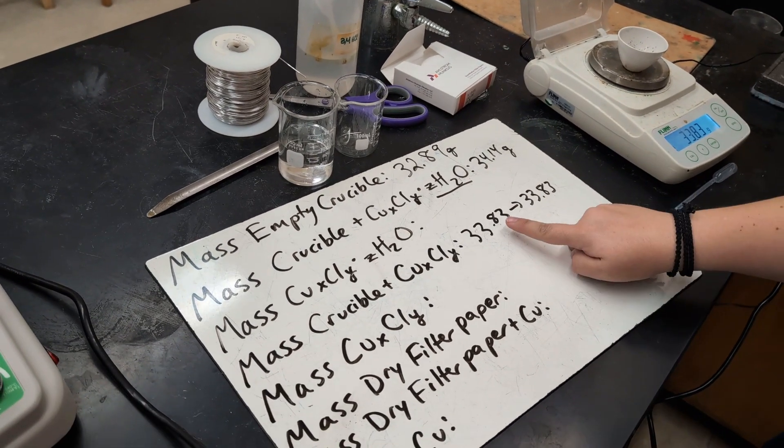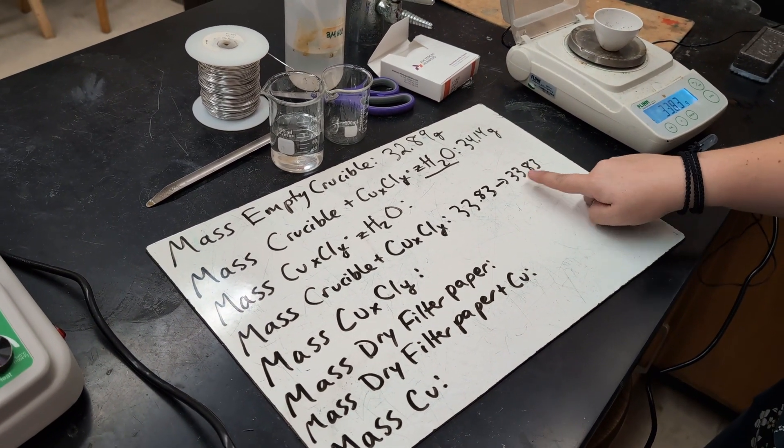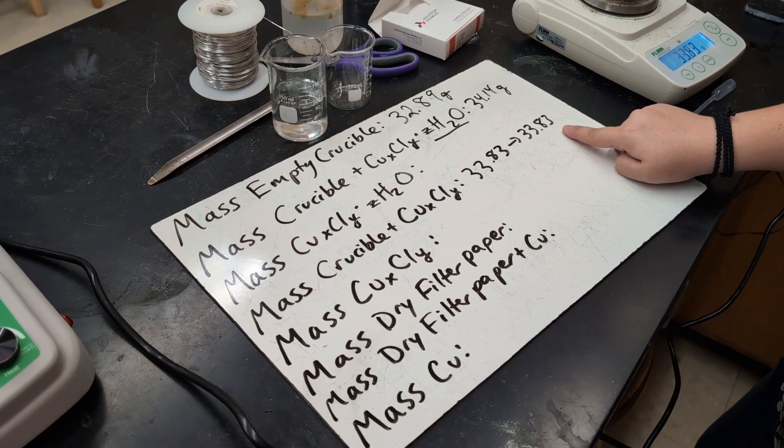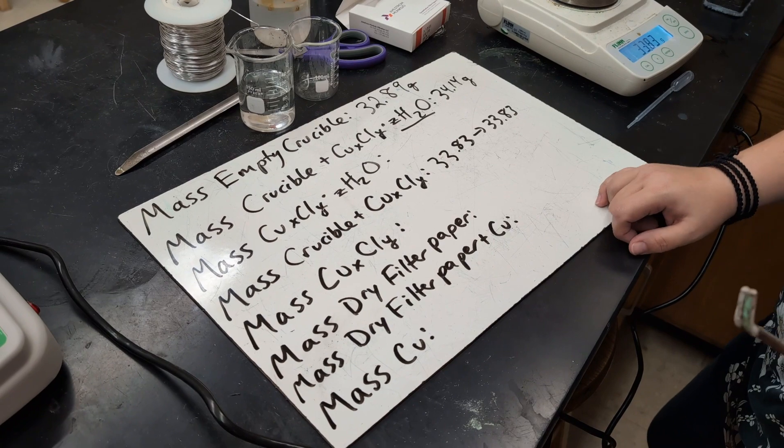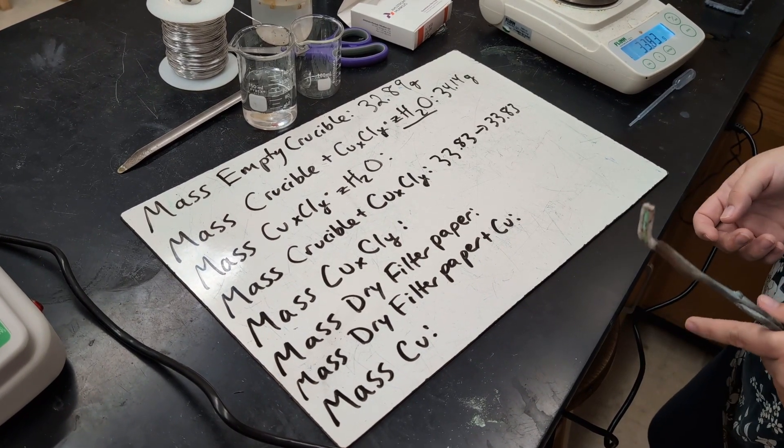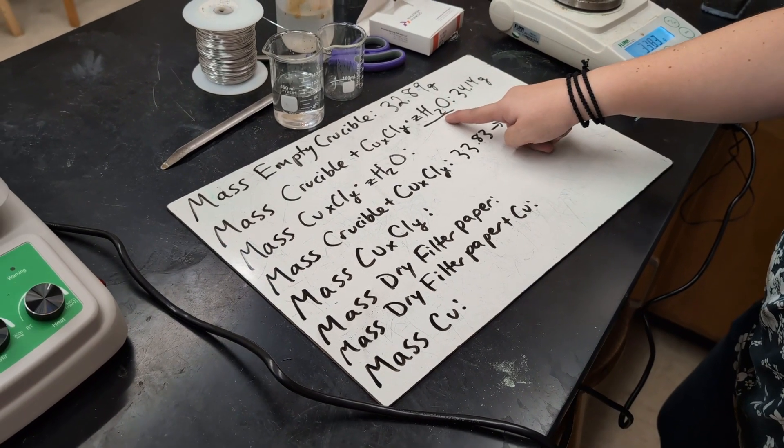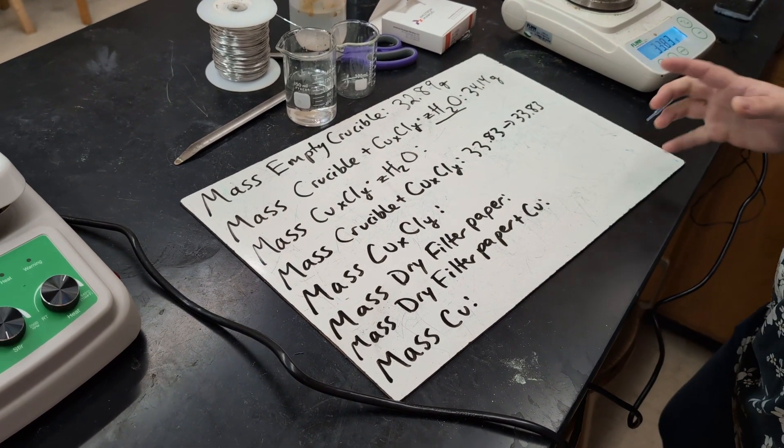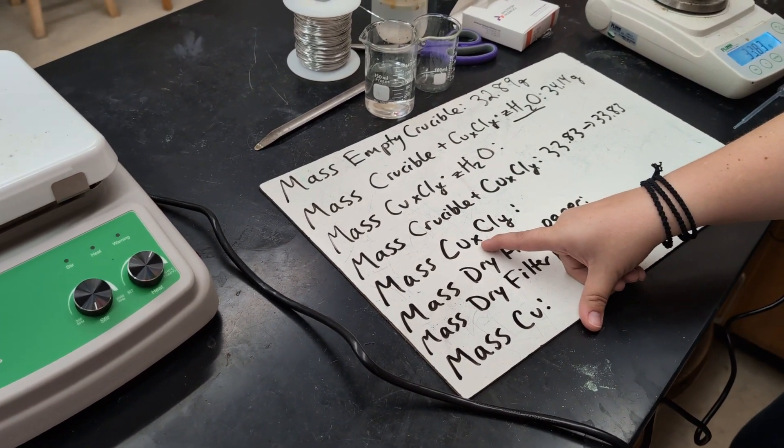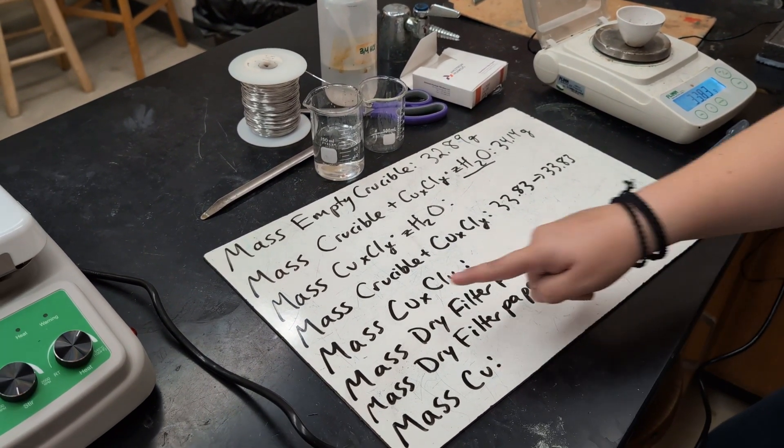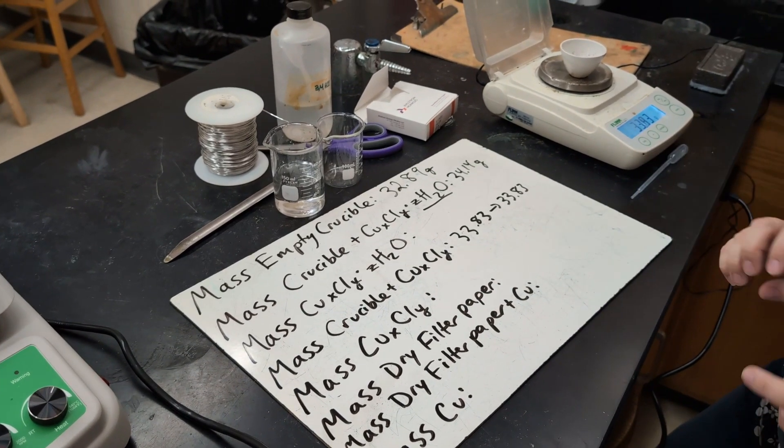So after a second round of heating, the mass stayed the same. So we know that all of the water evaporated from our hydrate. So now we're left with just our anhydrous copper chloride compound. So that's going to help us find the amount of waters of hydration, but it doesn't help us find the ratio of copper to chlorine. In order to find that, we have to do a chemical reaction to split the copper and the chlorine from each other.